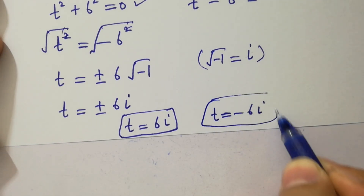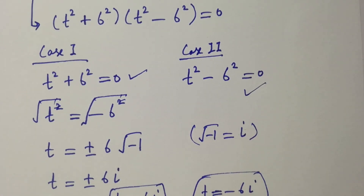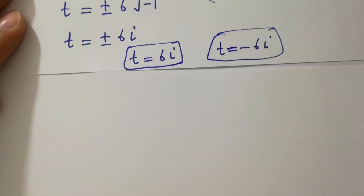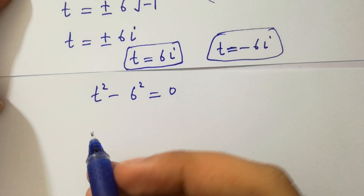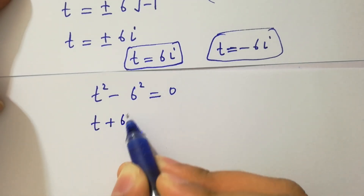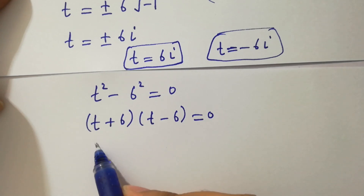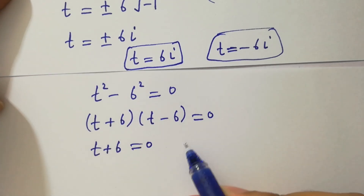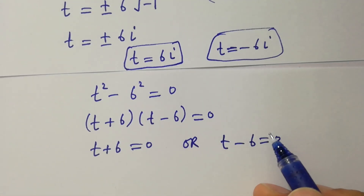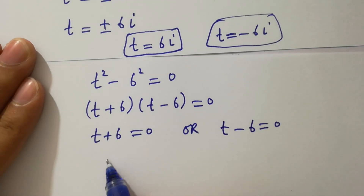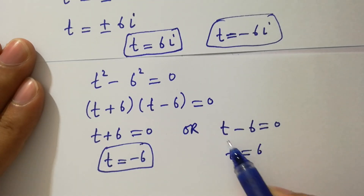Now taking Case 2: t² minus 6² equals 0. Applying the a² minus b² formula again, this becomes (t plus 6)(t minus 6) equals 0. Either t plus 6 equals 0 or t minus 6 equals 0, giving us t equal to minus 6 and t equal to plus 6.